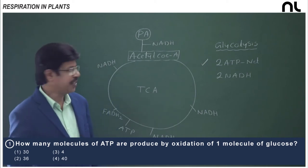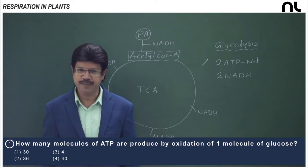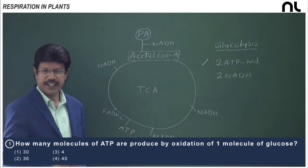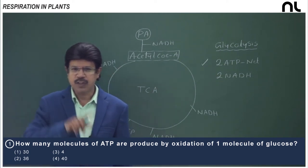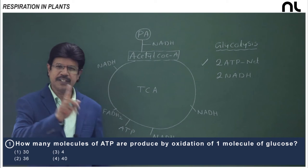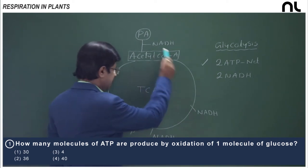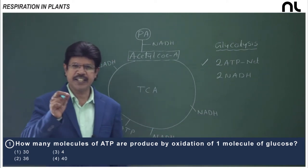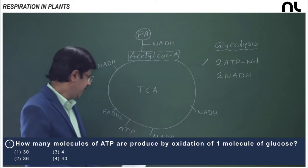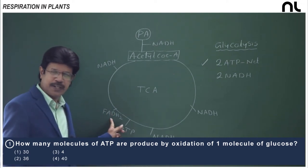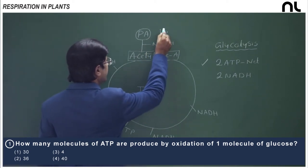In the mitochondria, for one pyruvic acid, 4 NADH, 1 FADH2, and 1 ATP are produced per Krebs cycle. Counting the total ATP: each NADH2 yields 3 ATP, so 4 × 3 = 12 ATP, plus FADH2 gives 2 ATP, plus 1 ATP from the cycle directly — giving a total of 15 ATP.